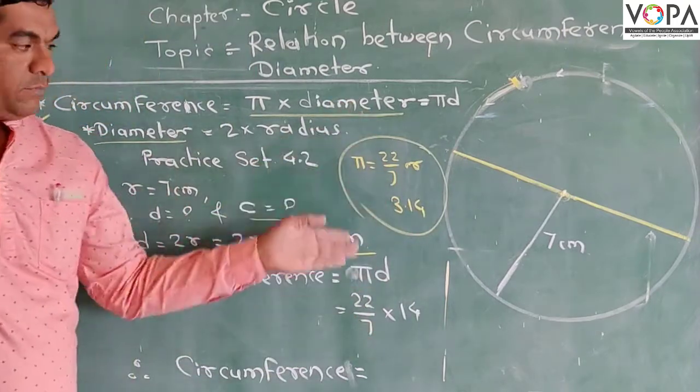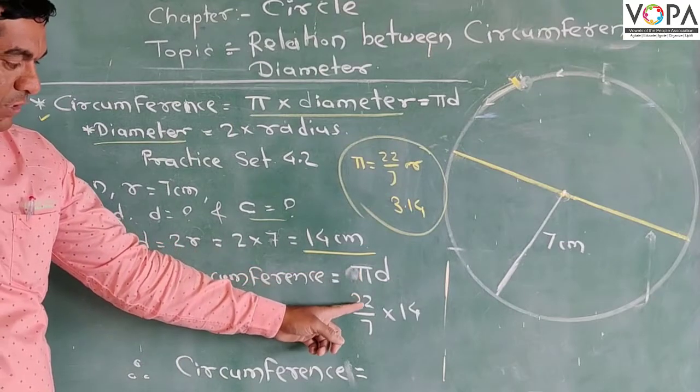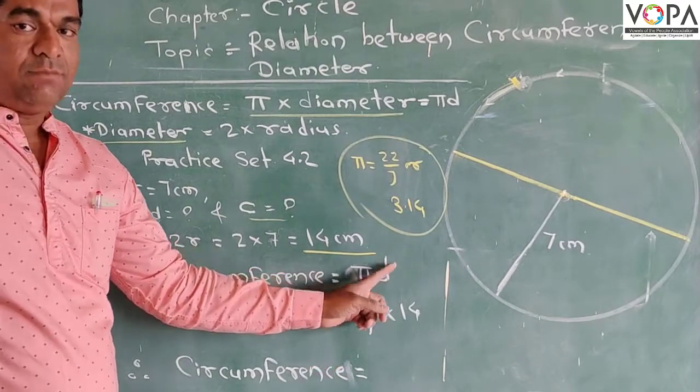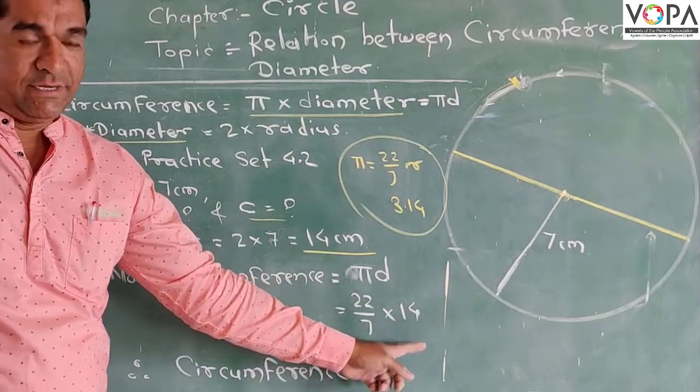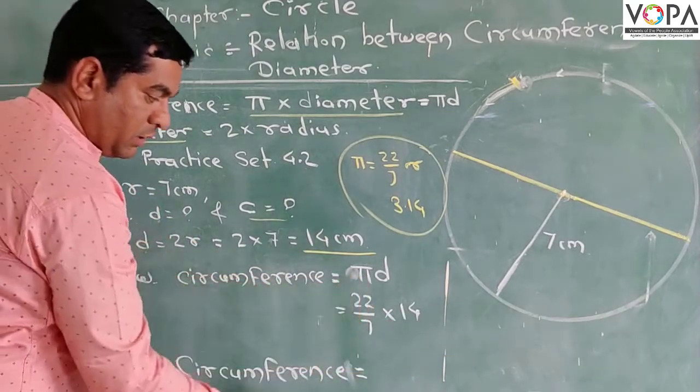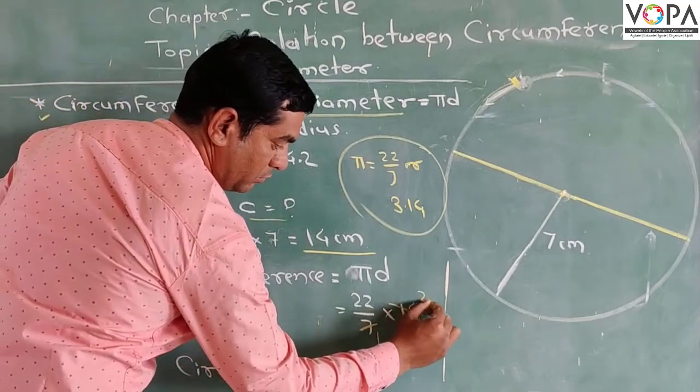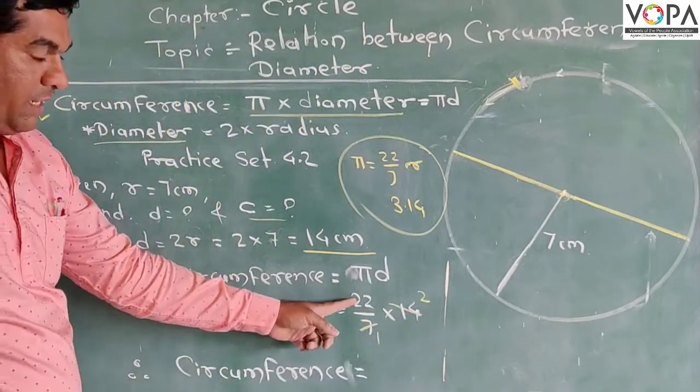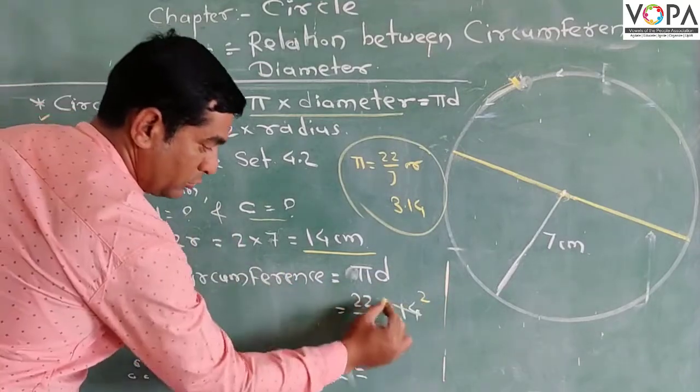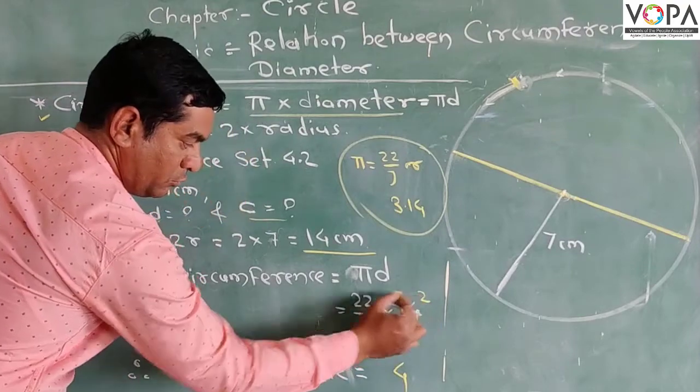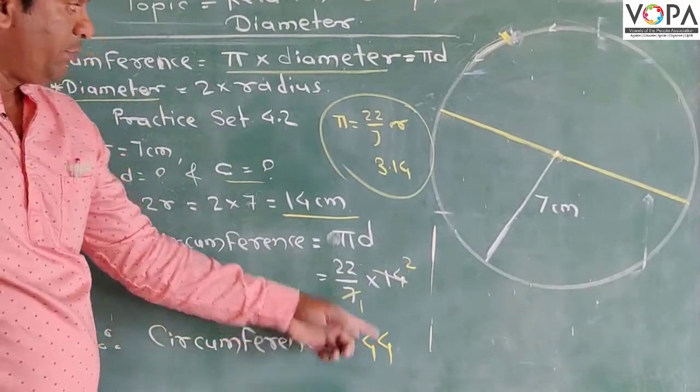We'll use 22 upon 7 here. So π equals 22 upon 7, and diameter D equals 14 centimeters. 7 cancels into 14, giving us 22 into 2. 22 into 2 equals 44. Therefore circumference equals 44.